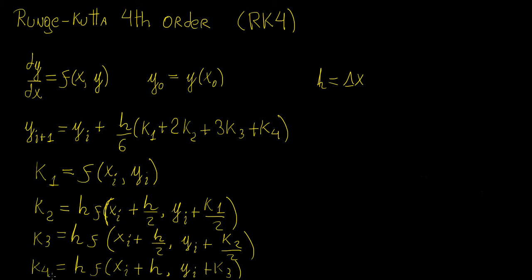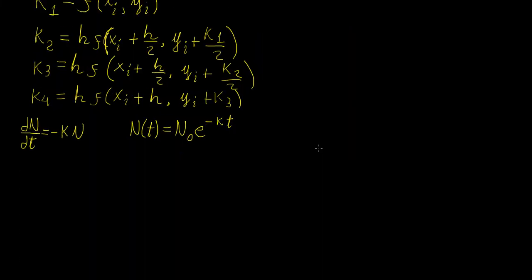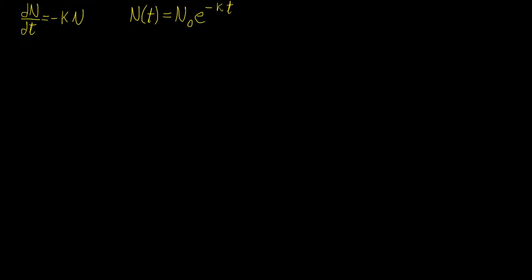In the end, we add up k1 through k4, put them into the update equation, calculate the next value in line, and repeat the whole process over and over again until we've completed the entire loop. Now we're going to look at a very simple example — the same one we looked at with the Euler method: an exponential decay problem. We're going to transform this into a usable equation for our RK4 algorithm. Let's call our function of t and n.